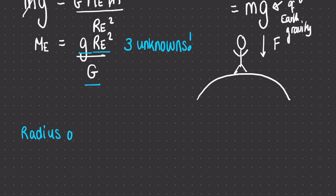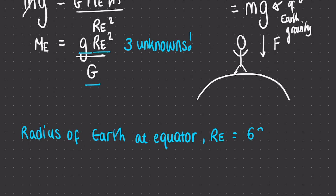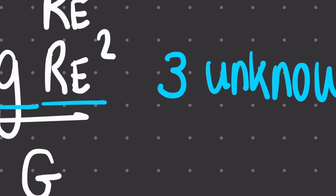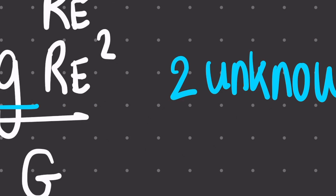Because of that work, we now know the radius of the Earth — at least at the equator — is 6,378 kilometers, or 3,963 miles. So that's one unknown down, but we still have the other two.